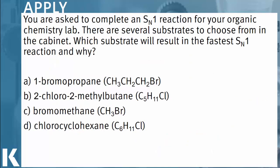Let's see how this all plays out with an applied question. We're asked to complete an SN1 reaction for our Orgo lab and have several substrates to choose from. The question asks which substrate will result in the fastest SN1 reaction and why. For SN1 reactions, remember that crossing out the one means we have a positive charge, so we're looking for carbocation formation. We need those electron density clouds around the carbocation — so we're looking for secondary or tertiary carbocations.